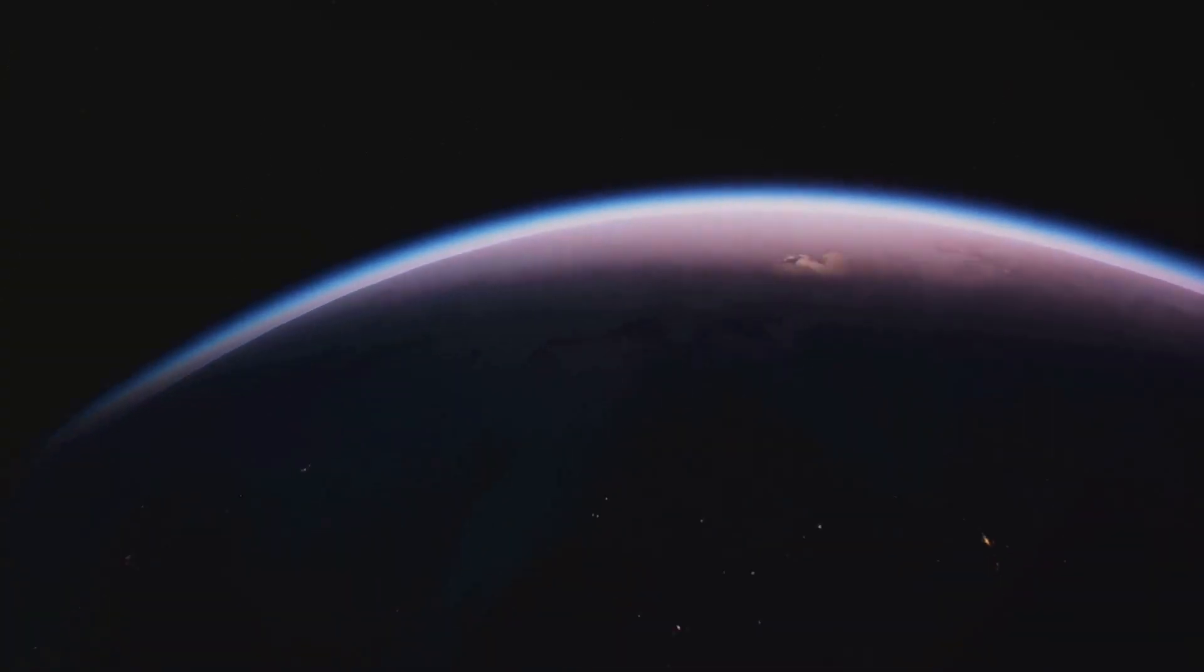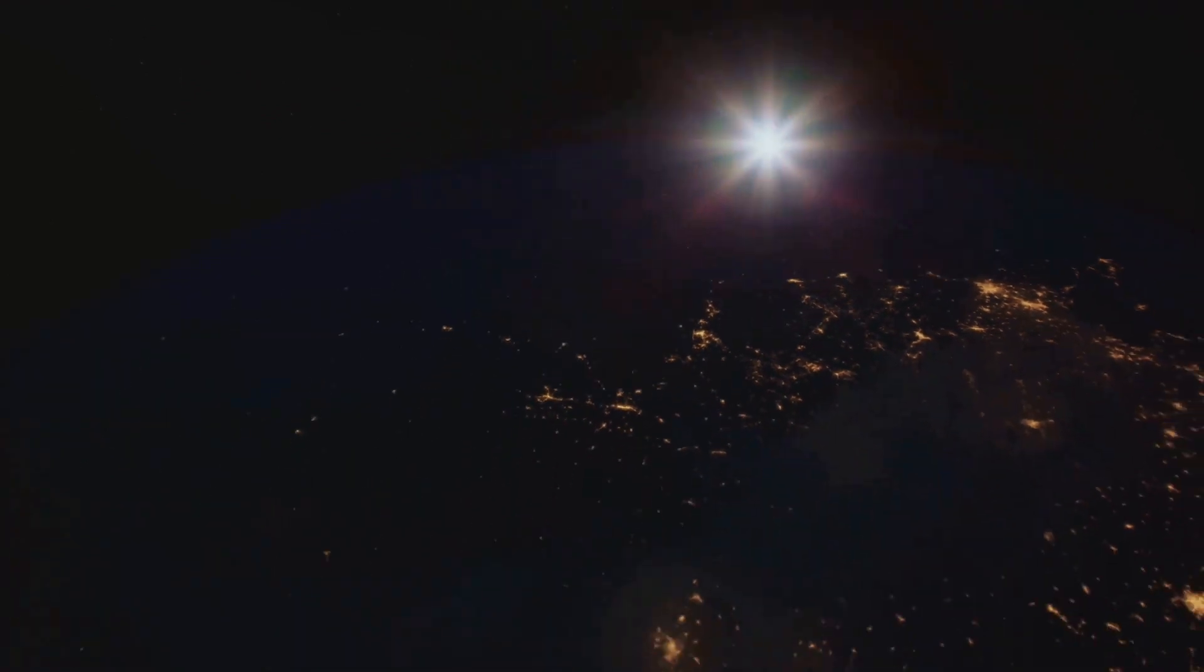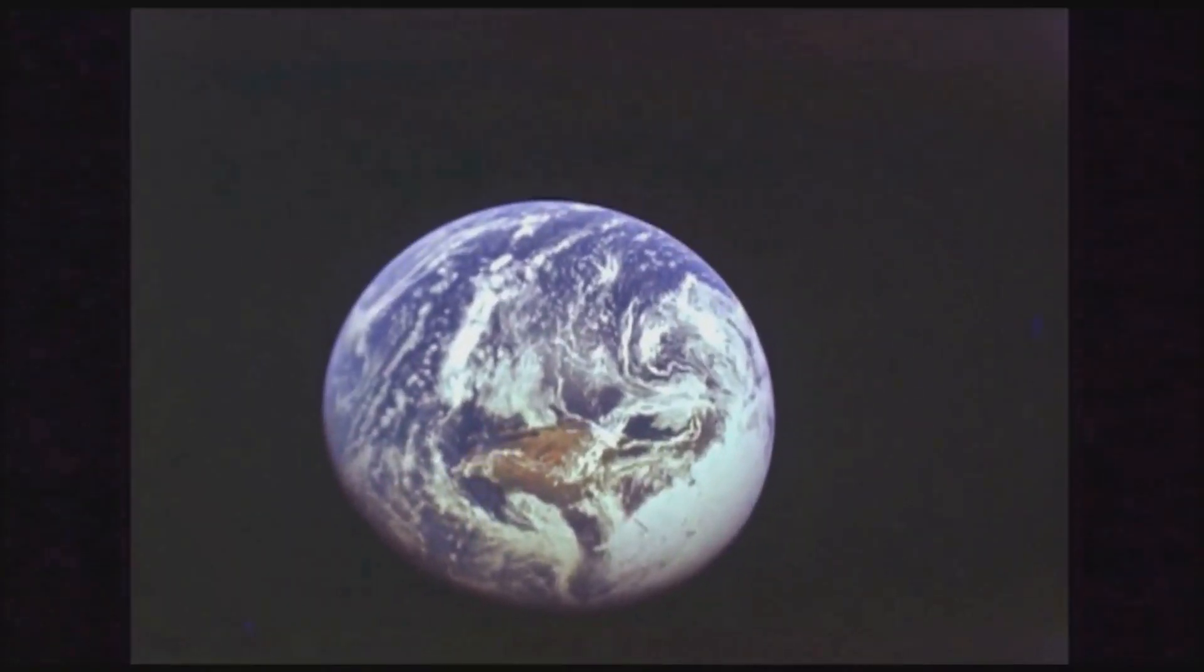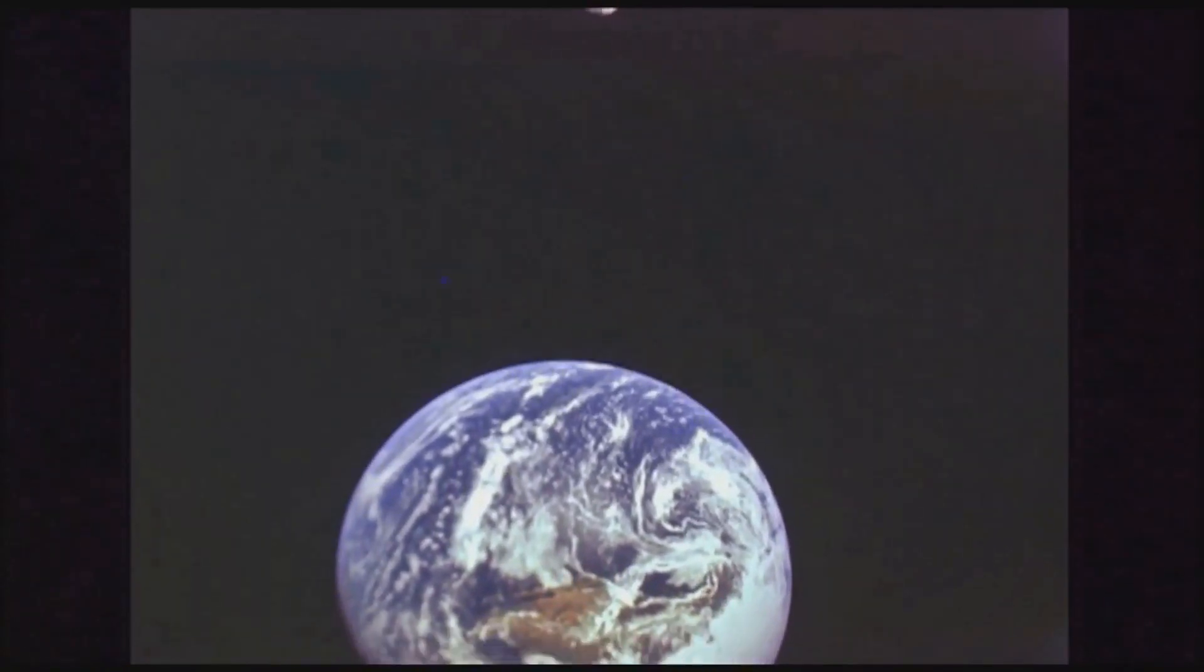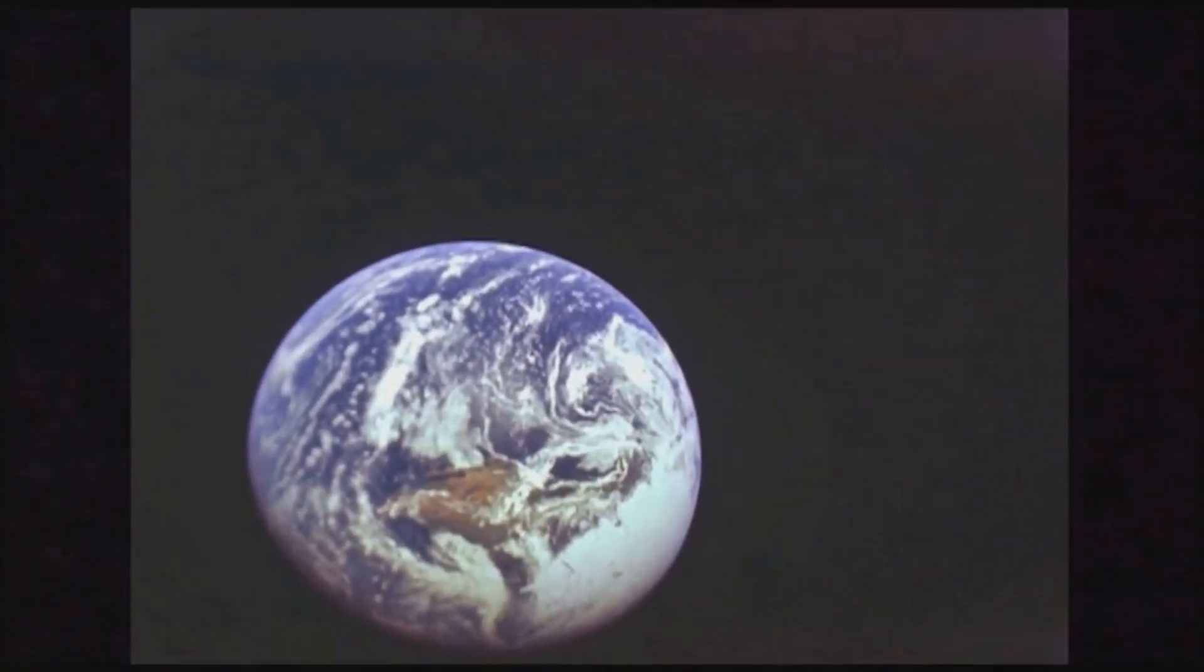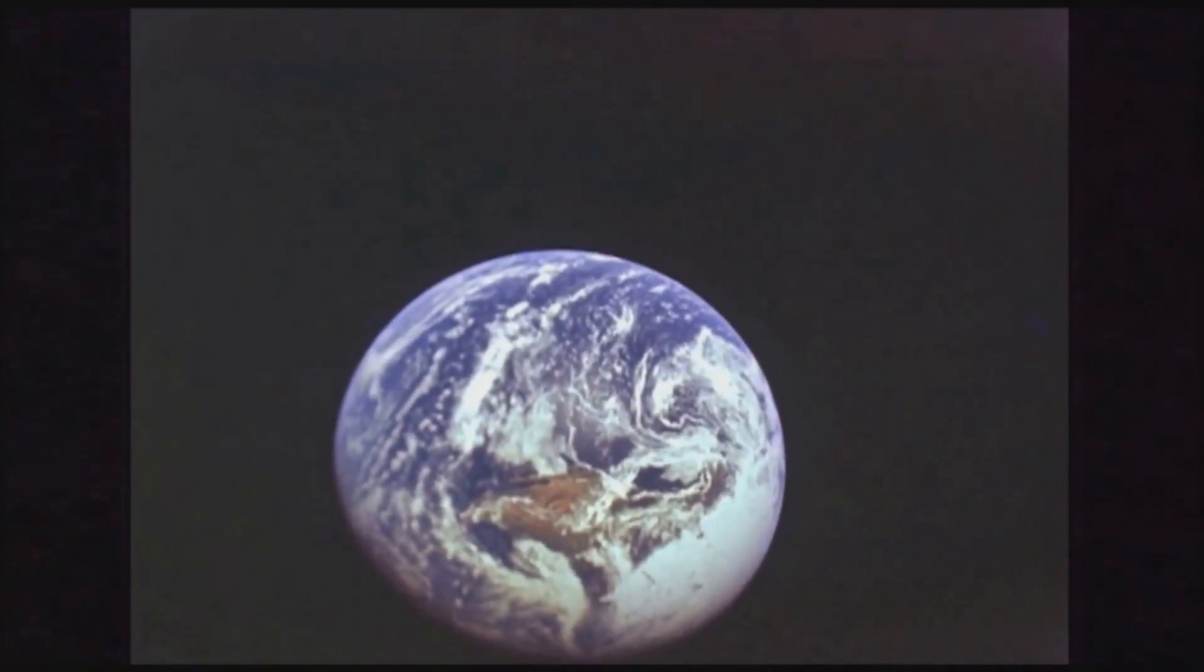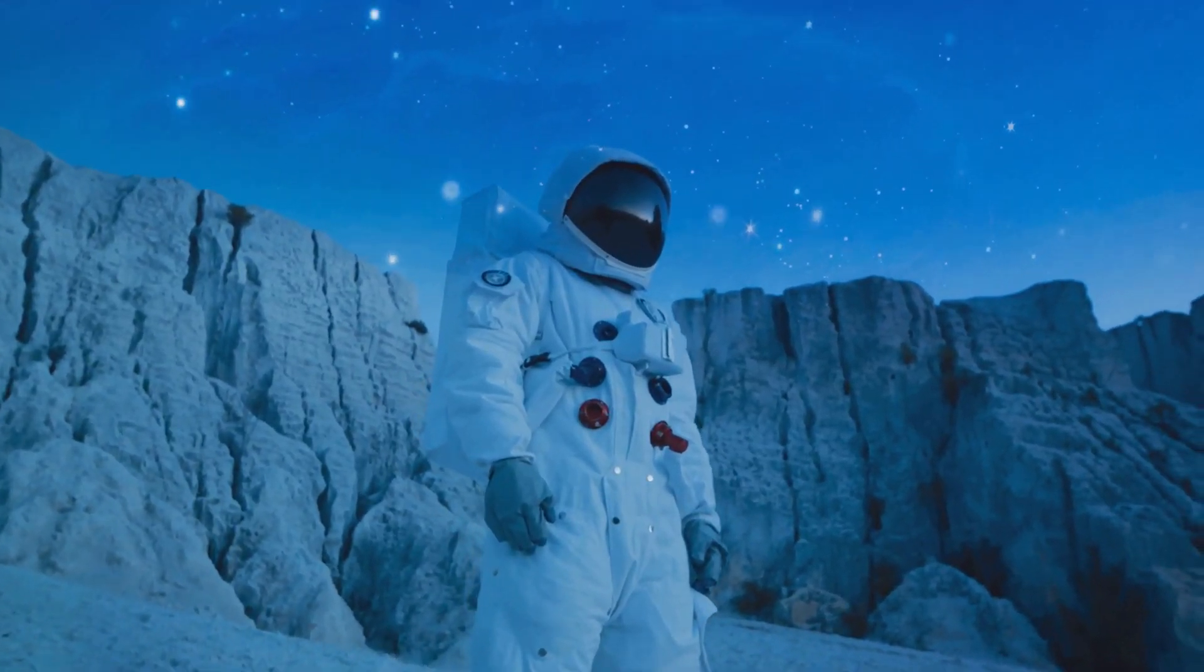Now, let's turn our attention to Proxima C. It's a super-Earth, about seven times the size of our planet, but it's much further from its star, meaning it likely has a frigid surface. Yet we can't rule out the existence of life. After all, life on Earth thrives in extreme conditions, from the icy Antarctic to the scorching Sahara.